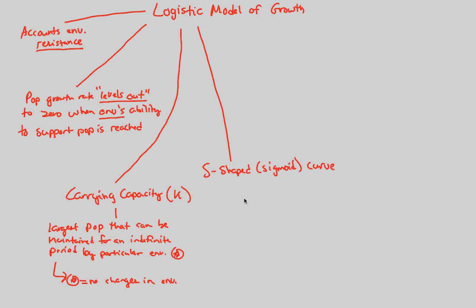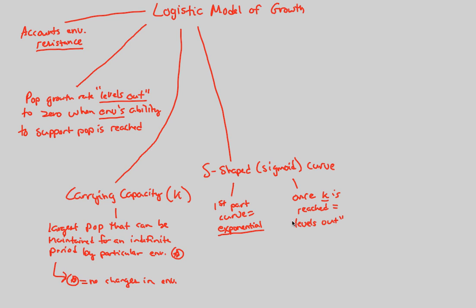Specifically, we have to first mention that the first part of the sigmoid curve is indeed exponential. A part of this graph does show exponential growth, so it would be wrong to say no exponential growth is ever seen in populations. But once K is reached — the carrying capacity — and the final resistance has been met, we're going to have a leveling out.